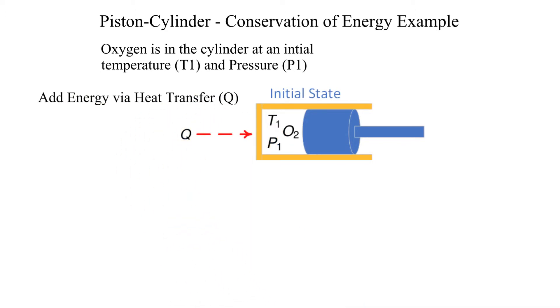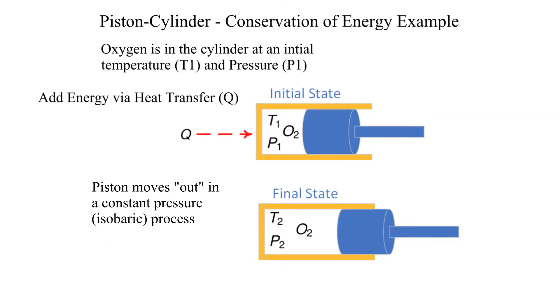Heat transfer adds energy to the oxygen. As energy is added to the oxygen the piston moves out in a constant pressure process. The final state is denoted with temperature and pressure of T2 and P2 respectively.